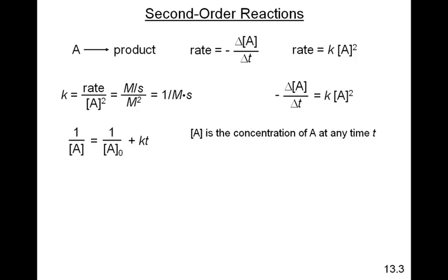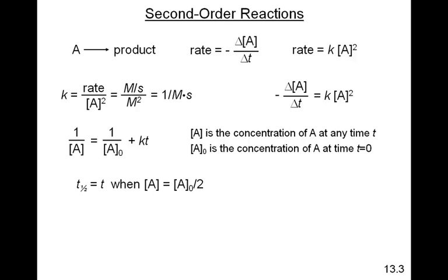A is the concentration at some time T. A₀ is the concentration when T equals 0. When T is equal to T one-half, that's the half-life. The half-life is equal to T when A is equal to A₀ over 2, as we discussed in the previous video. Therefore, when we plug in A₀ over 2 into the equation for A, and when we plug in T one-half for T, the half-life comes out to be equal to 1 over K times A₀. For second order reactions, the half-life is dependent upon the concentration at the initial time — the initial concentration.